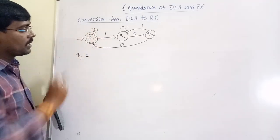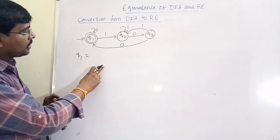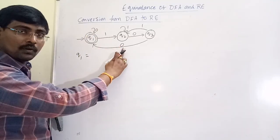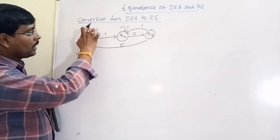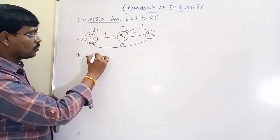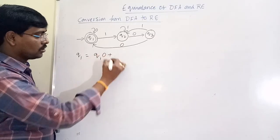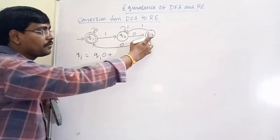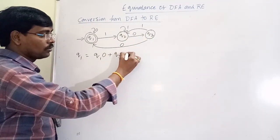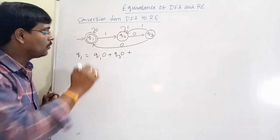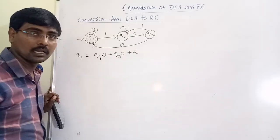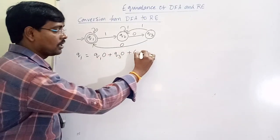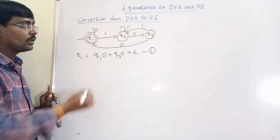Check all the incoming edges for Q1. We have two incoming edges: one is with zero, and another one is also with zero. Q1 on zero moves to Q1 again, so the equation is Q1·0. Another incoming edge is from Q3 on zero: Q3·0. Remember, for the initial state we have to write an additional epsilon. This is equation one.